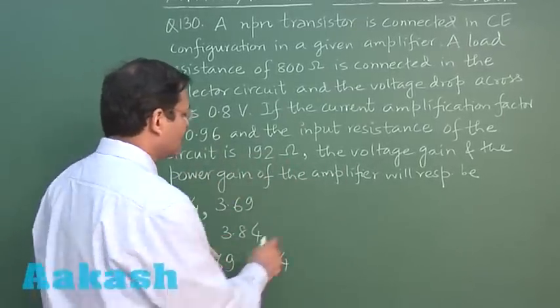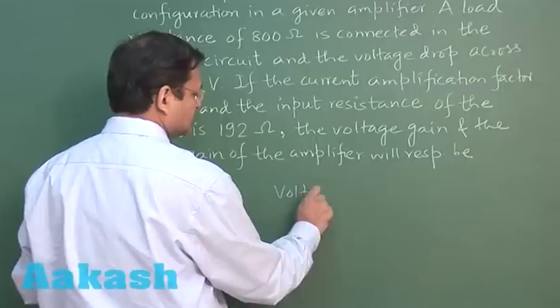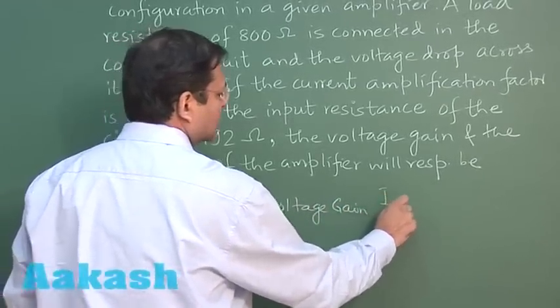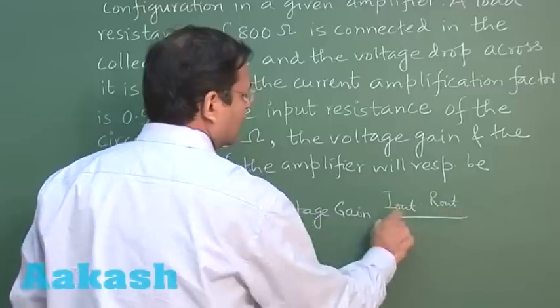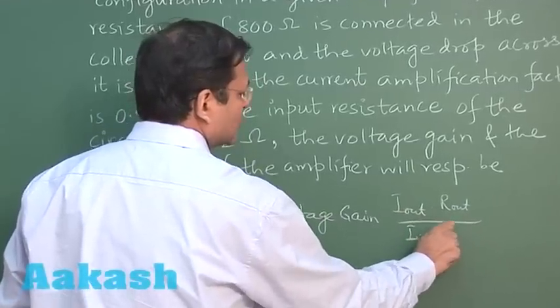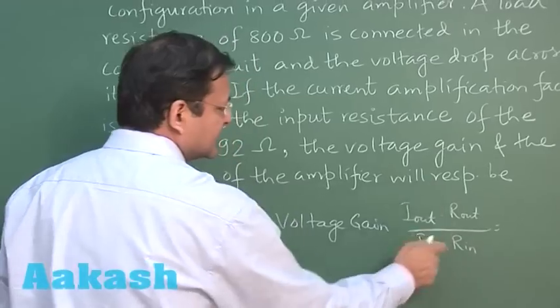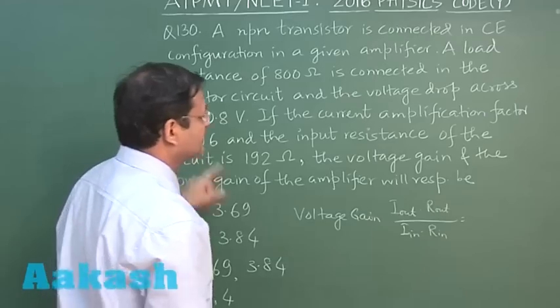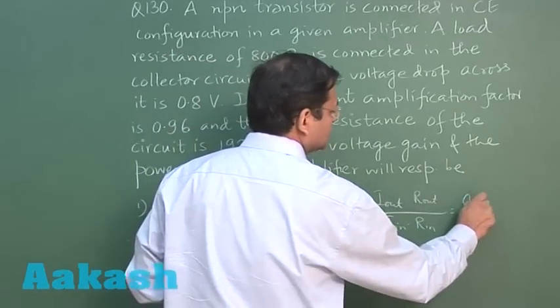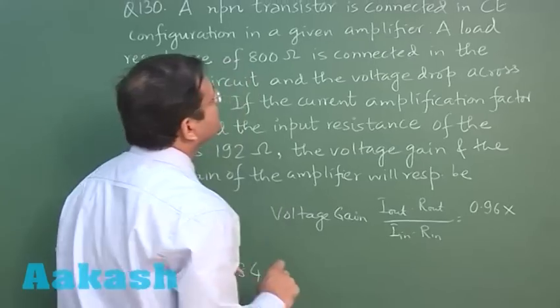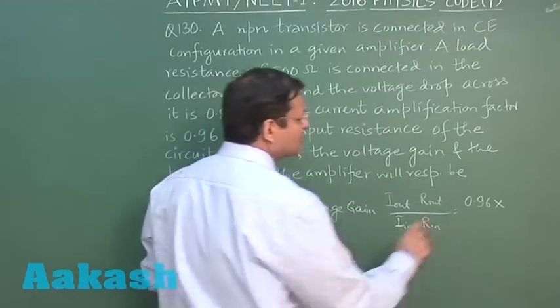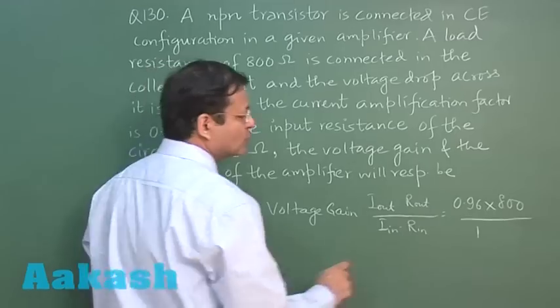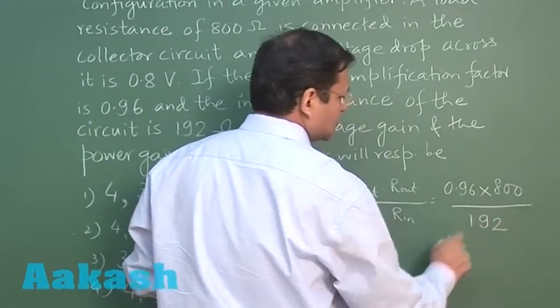Voltage gain is simply i out into R out upon i in into R in. This entire thing has been given to you as 0.96. The output resistance has been given to be equal to 800 and this has been given to be equal to input resistance 192.